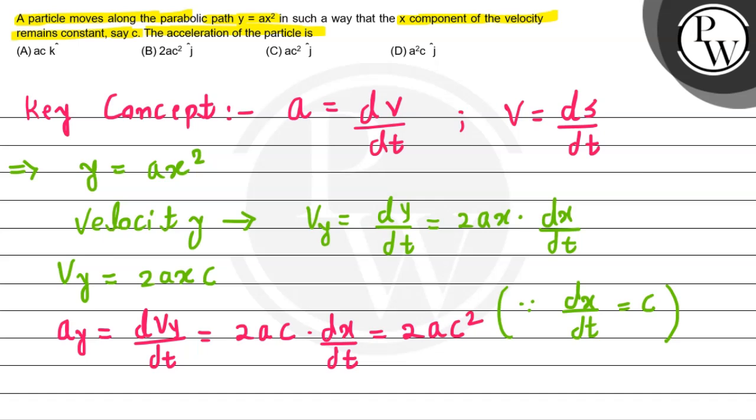Now if you see, we are getting only the y component of acceleration. The x component of acceleration equals zero. So the acceleration for the particle is a equals 2ac². As we are getting only the y component, it will be 2ac²j. This is our final required answer for this question, which we found by using the concept of a equals dv/dt and v equals ds/dt.